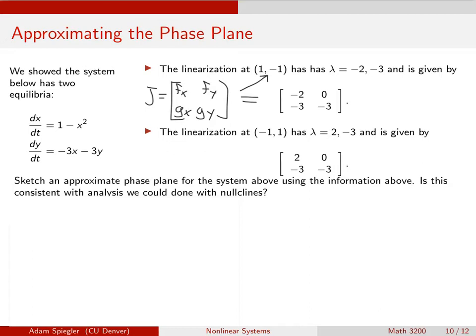And so the linearization at the first equilibrium (1, -1) had eigenvalues of -2 and -3. And so the eigenvalue of -2 has corresponding eigenvector (1, -3).